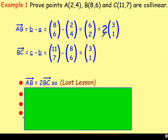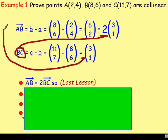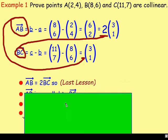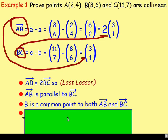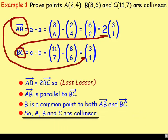So you can say that AB equals 2BC. You can express that as AB equals 2BC, meaning the vectors are parallel — AB is parallel to BC. And because they share a common point B in AB and BC, the points will be collinear.